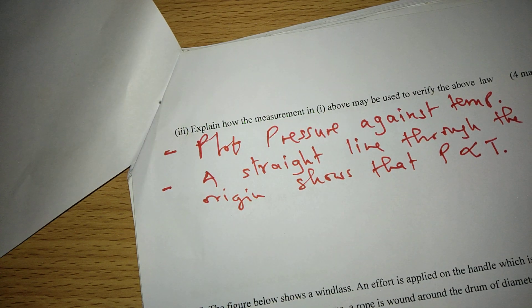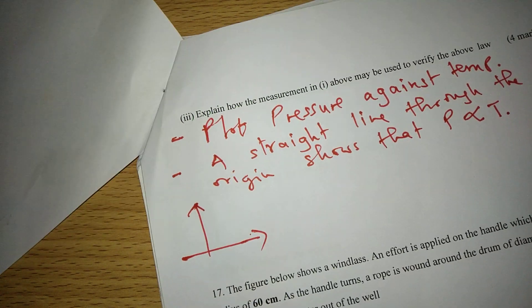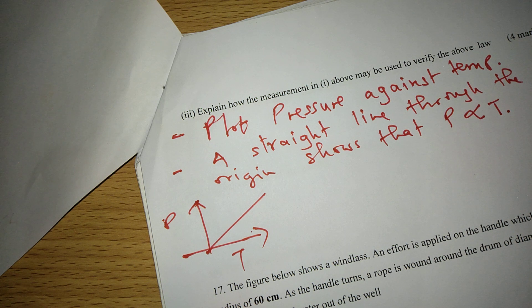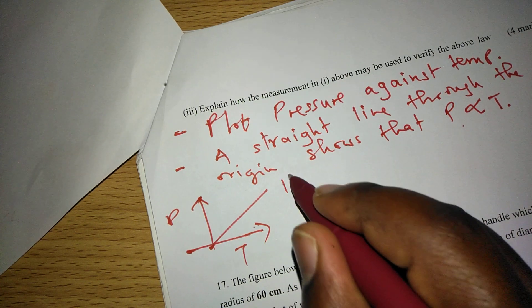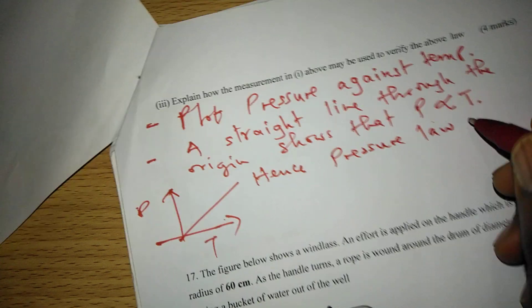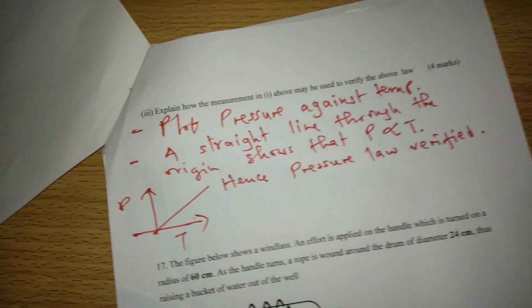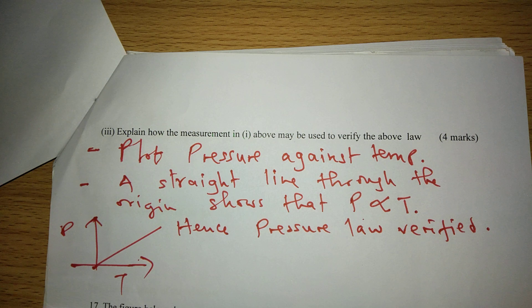In case we plot the graph of pressure against temperature and we obtain a straight line through the origin, then this will mean that pressure and temperature are directly proportional. Hence, pressure law verified. By confirming that they are directly proportional from the straight line, then we will have confirmed that pressure law has been satisfied or verified by this experiment.